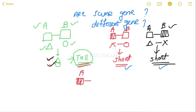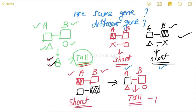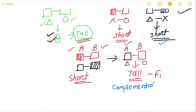Now let's cross two mutated plants — one with gene A mutated and gene B normal, and the other with gene A normal and gene B mutated. In the F1 generation, the offspring will inherit the wild-type genes from both parents. Gene A will produce the triangular protein and gene B will produce the circular protein, resulting in a tall plant. The parents are short due to their respective mutations, but the F1 generation offspring are tall — so complementation occurs here.